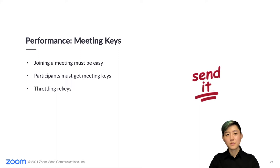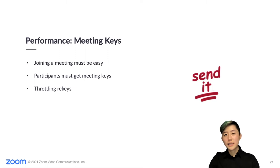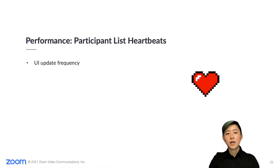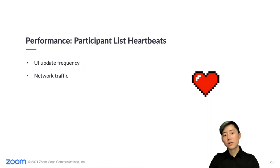To reduce spikes in meeting key traffic, we throttle rekeys, such that the leader might not rekey for every participant join or leave if they happen within a short period of time, but will rekey within 15 seconds. Joins and leaves happen more often than you might think, especially at the beginnings and ends of large meetings. To determine the participant list heartbeat frequency, we needed to consider a reasonable user experience in terms of how frequently the participant list in the UI would update, while also not producing overwhelming network traffic. We made various optimizations to the participant list data structures, representing heartbeats as an incrementally updated list of participant changes.